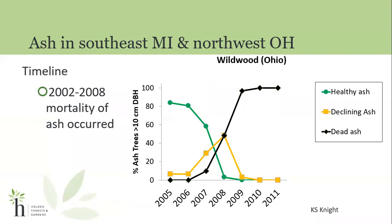We have that beginning timeline back in 2000. 2002 is when it really started to be evident in northern Ohio, and between 2002 and 2008 is when we observed the peak mortality of ash from that initial wave of EAB infesting the area. Our graph here by Kathleen Knight is of one of her plots in northwest Ohio, showing the percentage of ash trees greater than 10 centimeters diameter at breast height and how they progressed in their health over time. Within those first five or six years, the majority of the larger ash had perished from EAB.